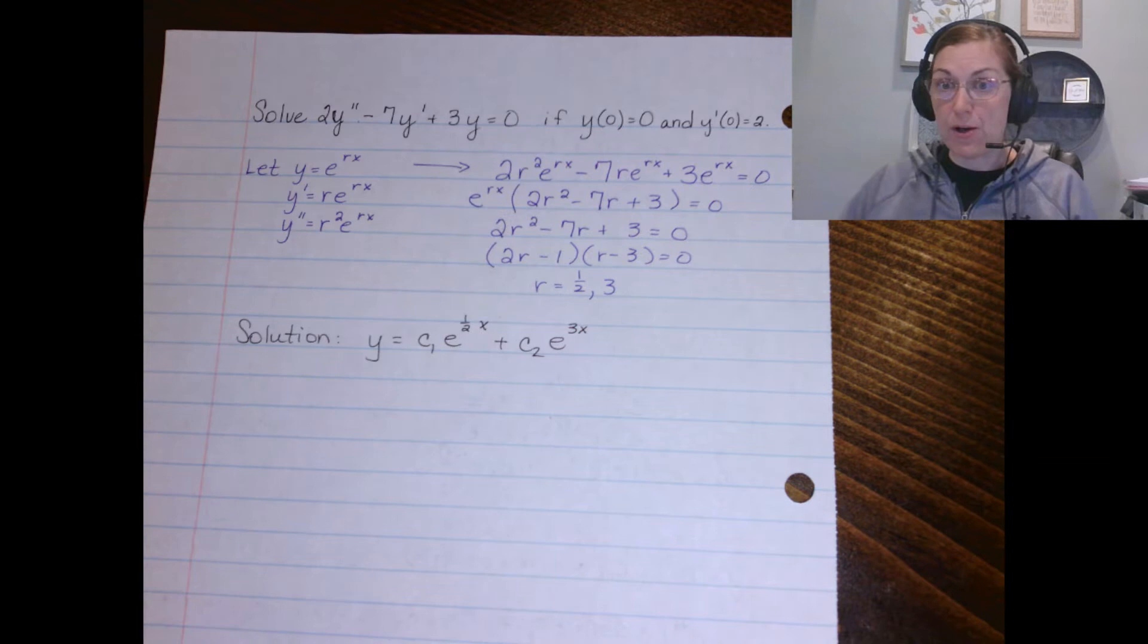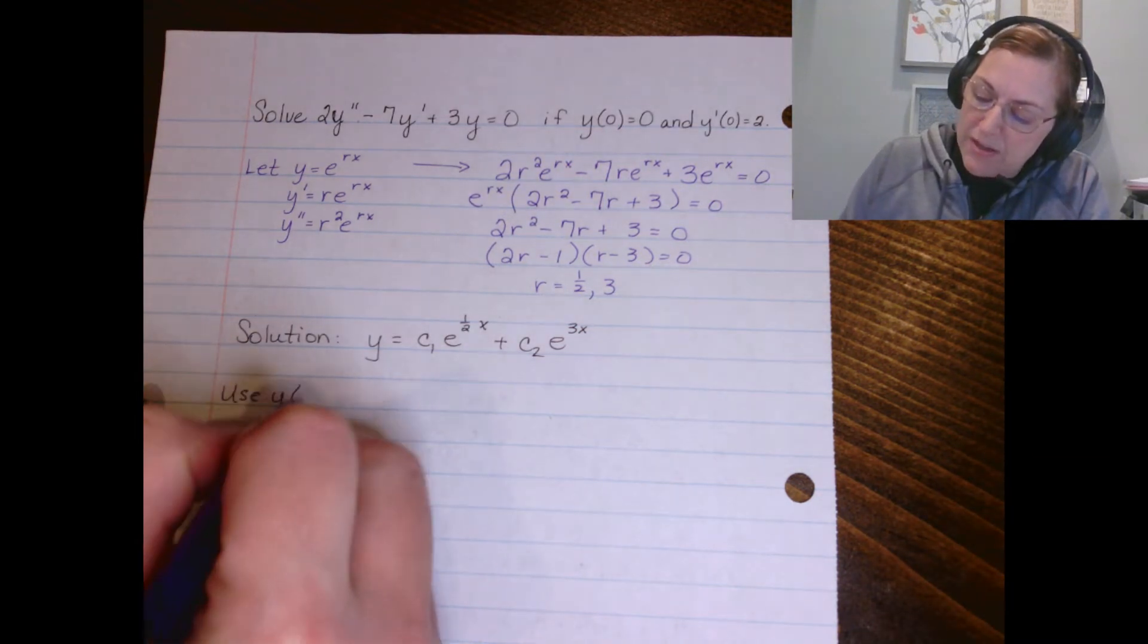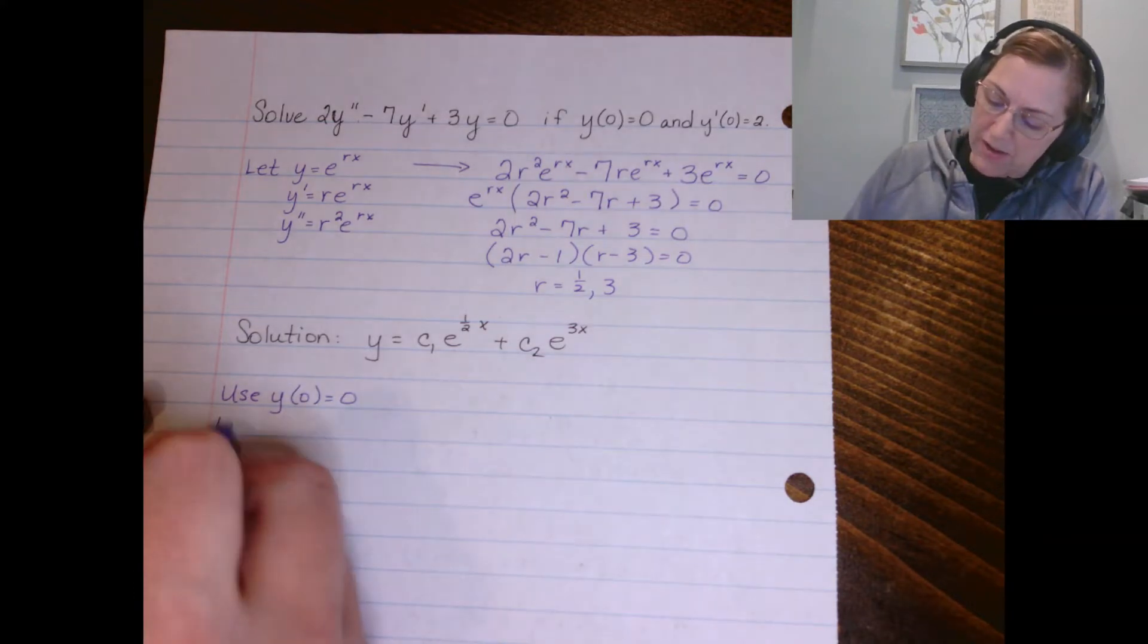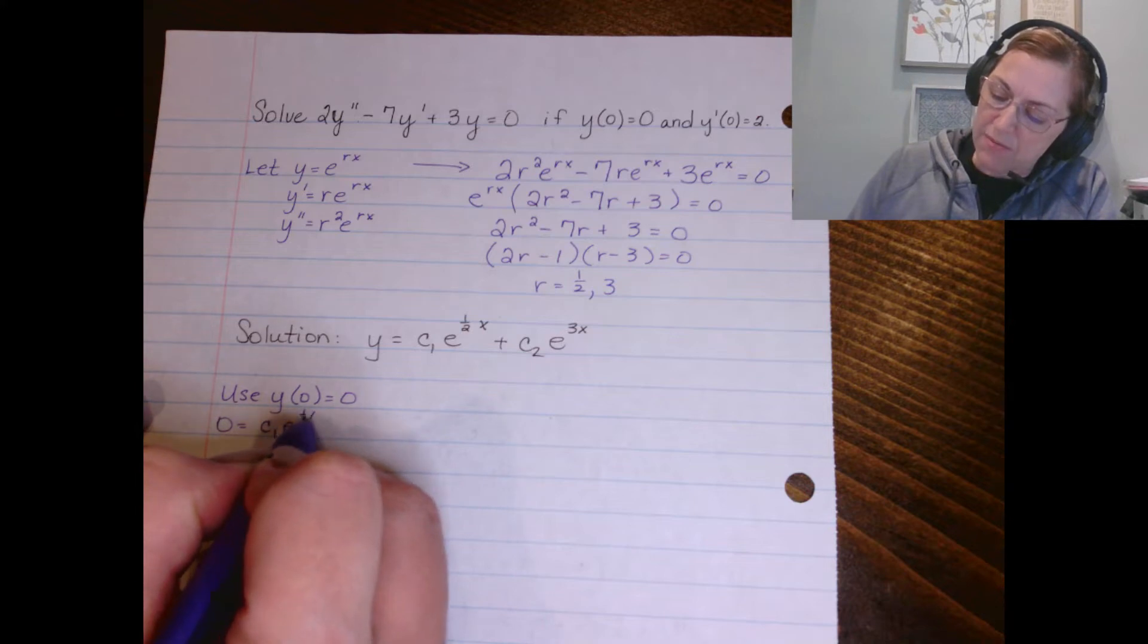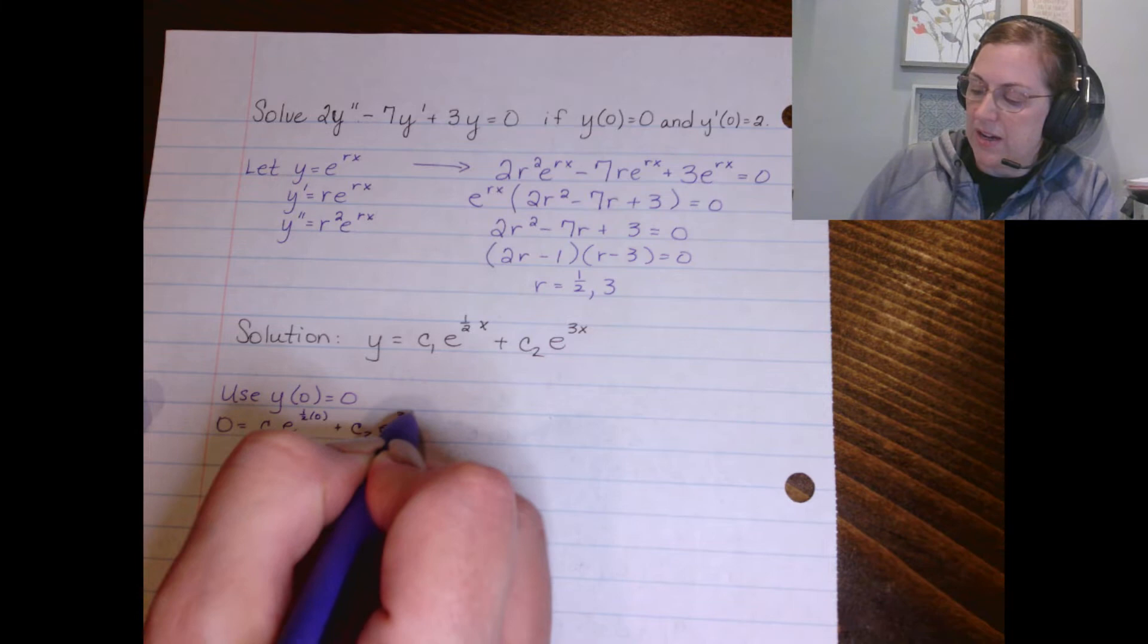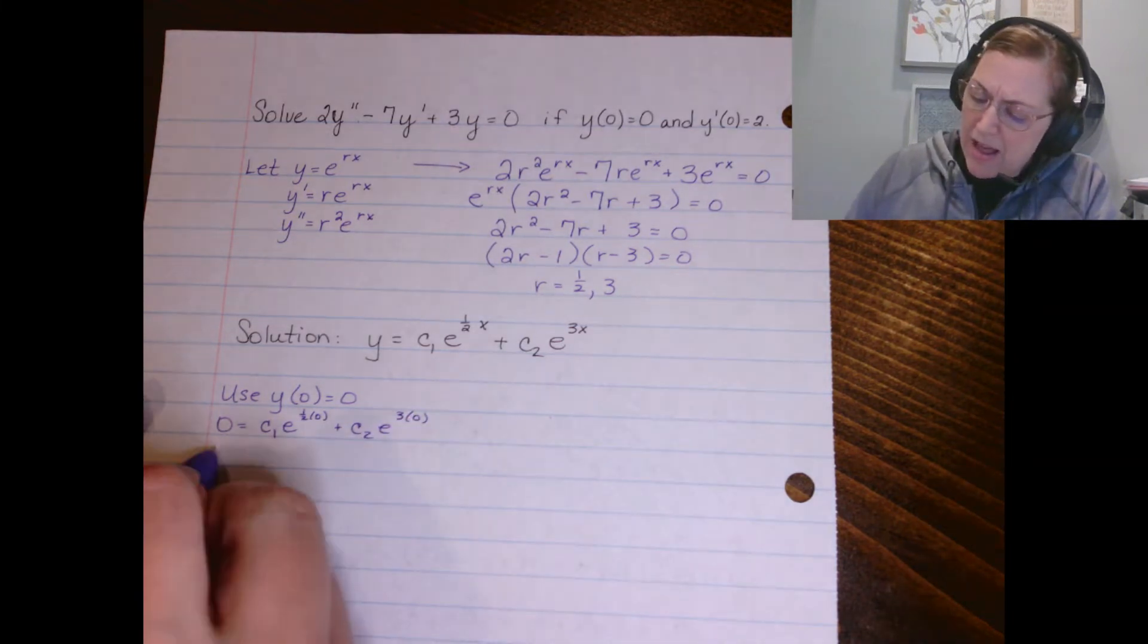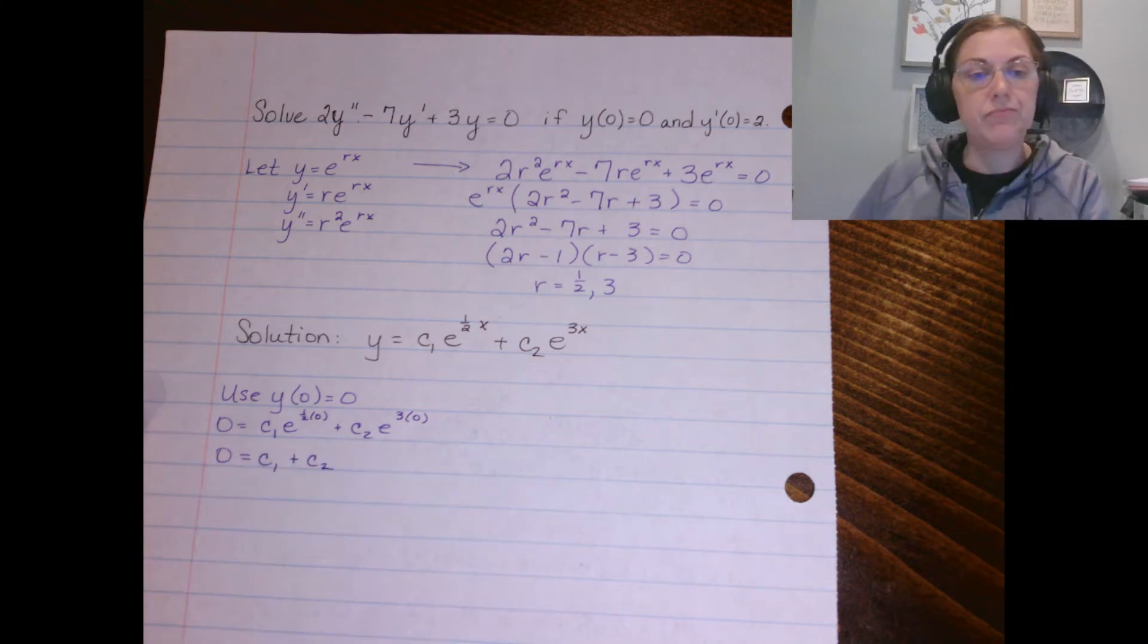So we're going to use that y(0) = 0. So y is zero and x is zero. I got 0 = c₁ e^(1/2 × 0) + c₂ times e^(3 × 0). e to the zero is going to be one, so I'm left with 0 = c₁ + c₂. I don't really have anything to go with there, so I'm going to use the other value I'm given.